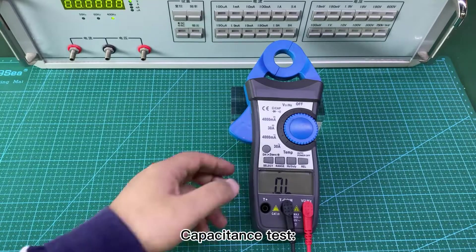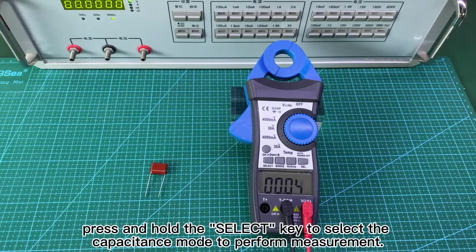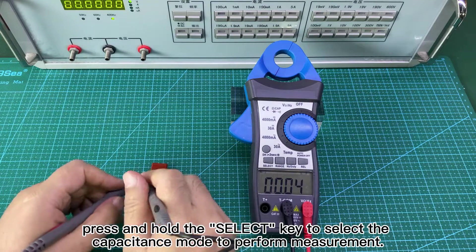Capacitance test. Under the function keys, press and hold the select key to select the capacitance mode to perform measurement.